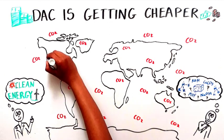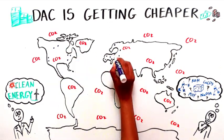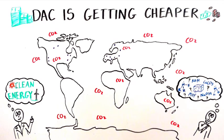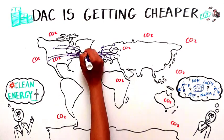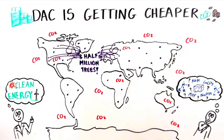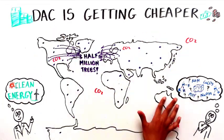The 15 DAC plants currently in operation around the world are capturing 10,000 tons of CO2 per year. That's equivalent to the work of close to half a million trees. As DAC becomes more affordable, more units will hopefully make an even bigger dent in our emissions.